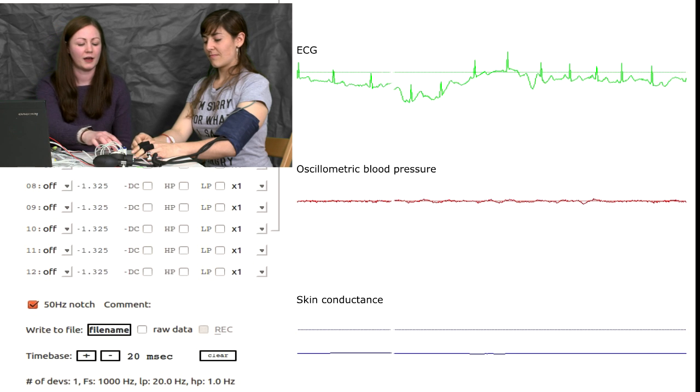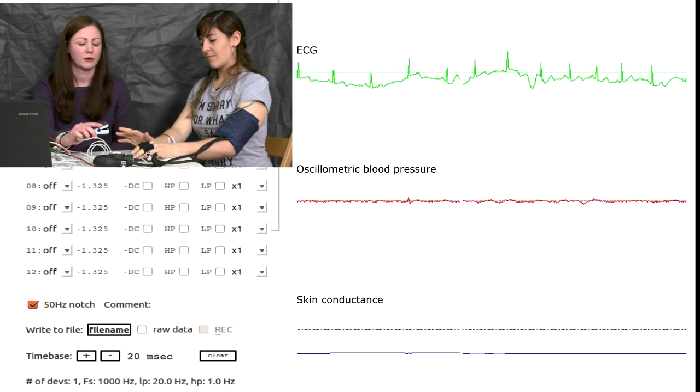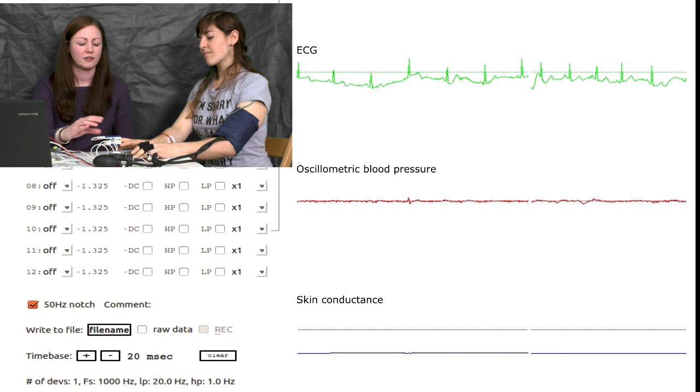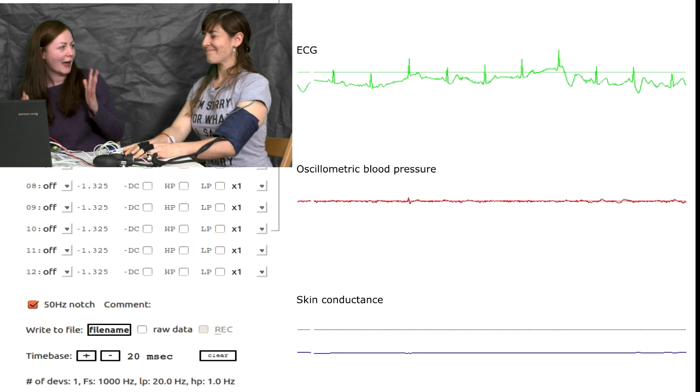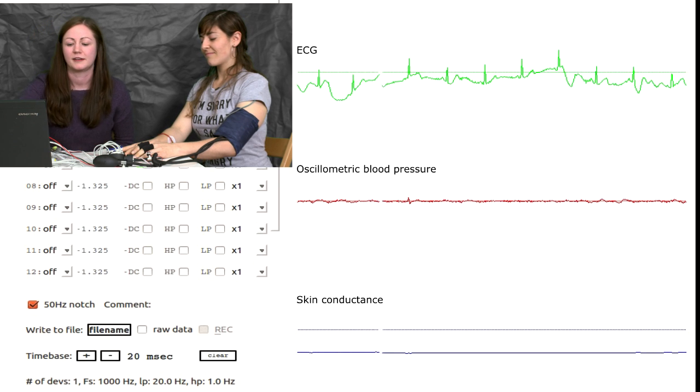And then we've got a pulse oximeter, which we're going to put on your finger. So this is going to measure your pulse. And as you lie, your heart's going to beat a lot faster, and you're going to be panicked. So we should be able to see that in our data.